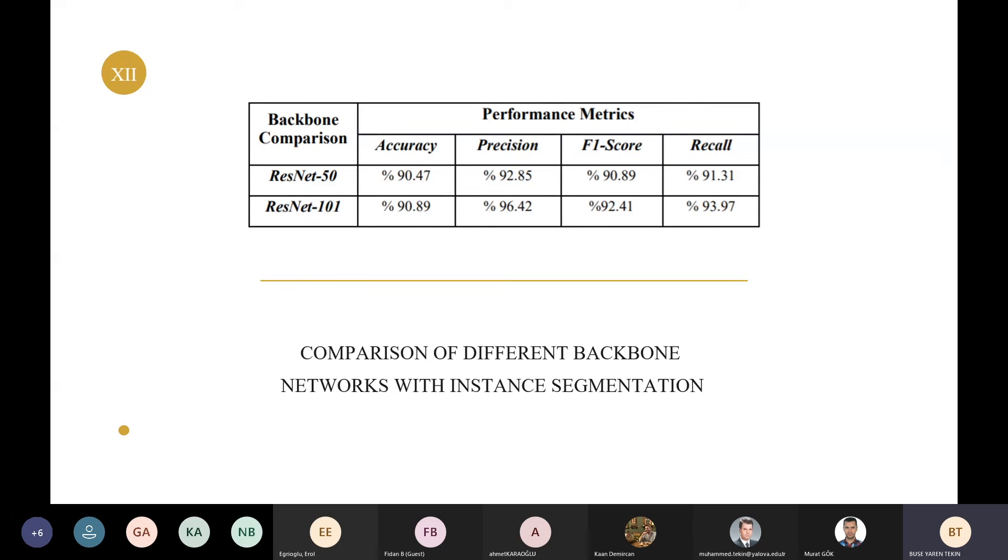The table shows compression of different backbone networks with instance segmentation. You can see in the table accuracy, precision, F1 score, and recall performance metric comparison of residual networks. It has been observed that the ResNet-101 network produces more performance results.